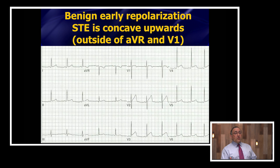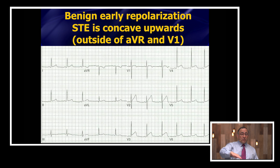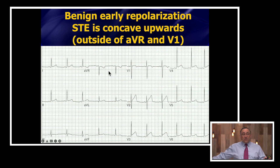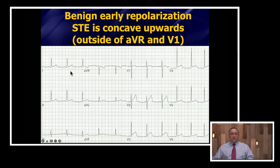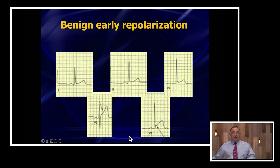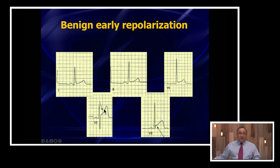There are a few other requirements before you can call something early repolarization. Number one, the ST elevation always has to be concave upwards. If you ever have horizontal or tombstone elevation, it can't be early repol — it's got to be a STEMI. Also, you should never have reciprocal ST segment depression beyond aVR and V1. Some ST depression in aVR and V1 is common in just about anyone, but if you have ST depression in any of the other 10 leads, you've ruled out early repolarization and pericarditis — that's got to be a STEMI.